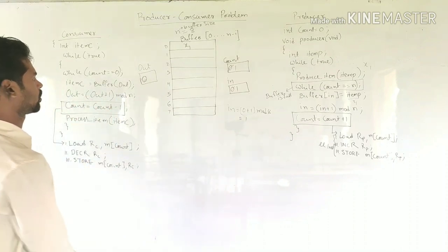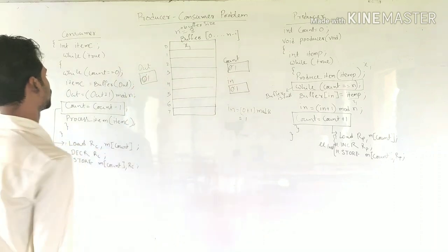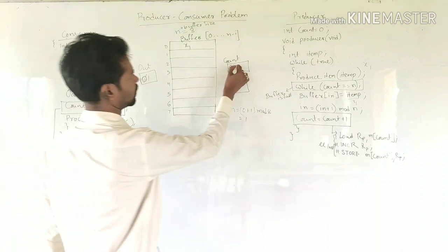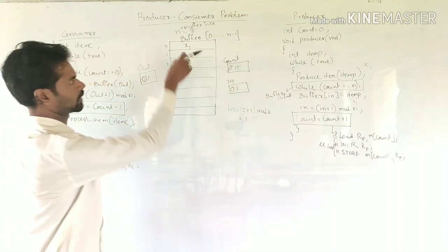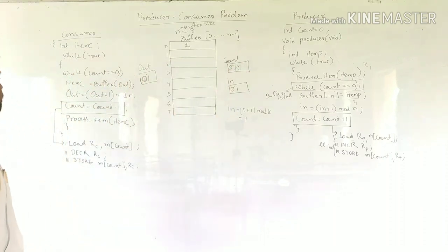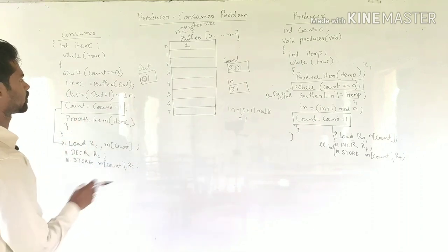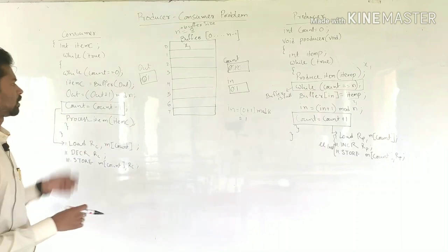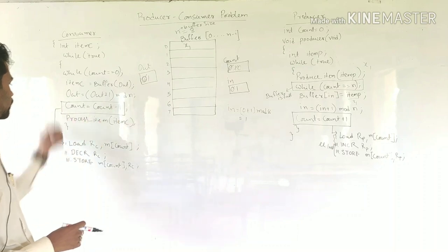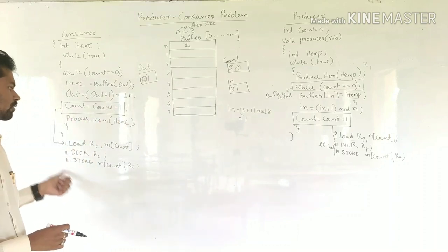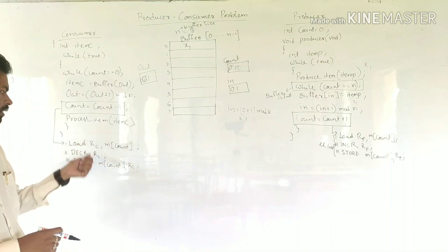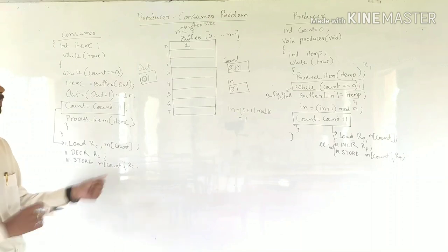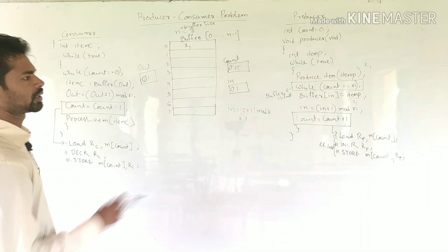Then out = (out + 1) mod n, so out becomes 1. Next, count = count - 1, which decrements the count. Count gives the number of items present inside the buffer. The statement count = count - 1 is also divided into three micro-instructions: load RC from m_count, decrement RC, then store the decremented value back to m_count.